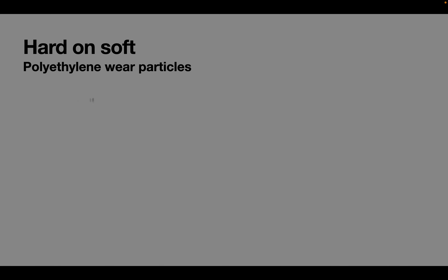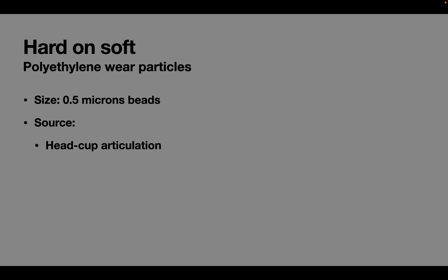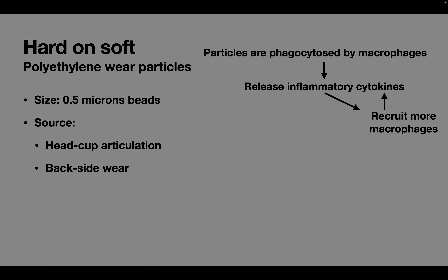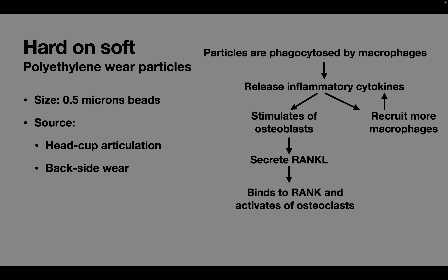Polyethylene particles are generated in beads and are about the size of half a micron. These particles arise from the head-cup articulation or from the cup-acetabular junction, also called backside wear. Polyethylene wear particles are phagocytosed by macrophages, which release inflammatory cytokines that help recruit more macrophages in a positive feedback loop. Cytokines also stimulate osteoblasts to secrete RANK ligand, which activates osteoclasts by binding to RANK receptors. Activated osteoclasts are responsible for osteolysis and implant loosening.